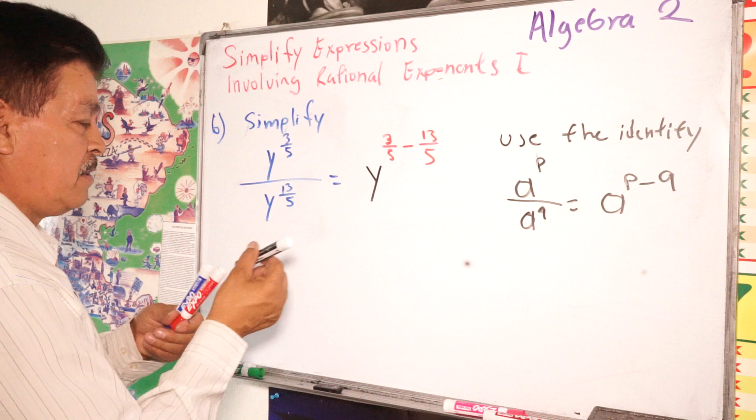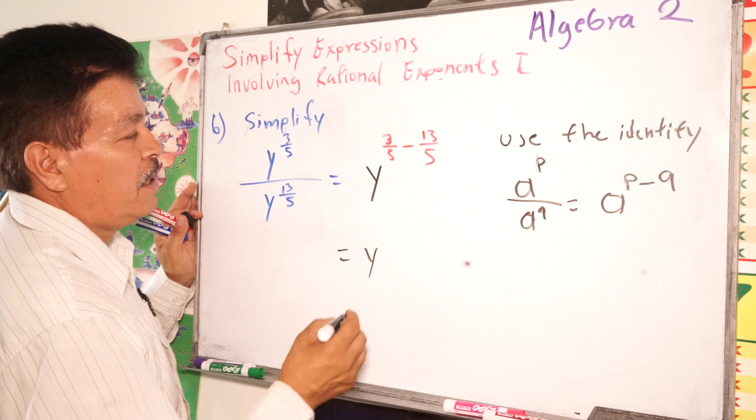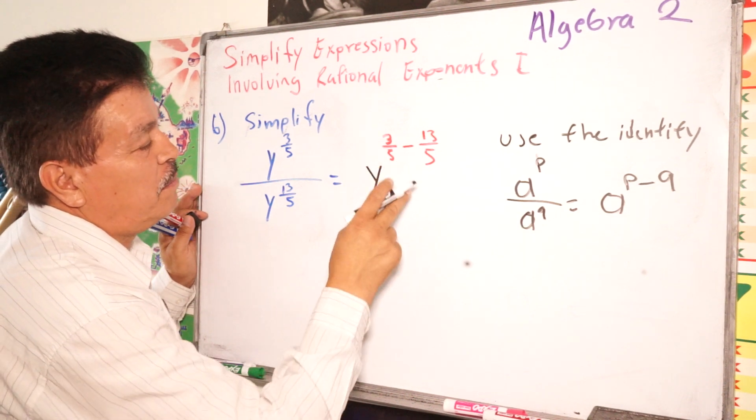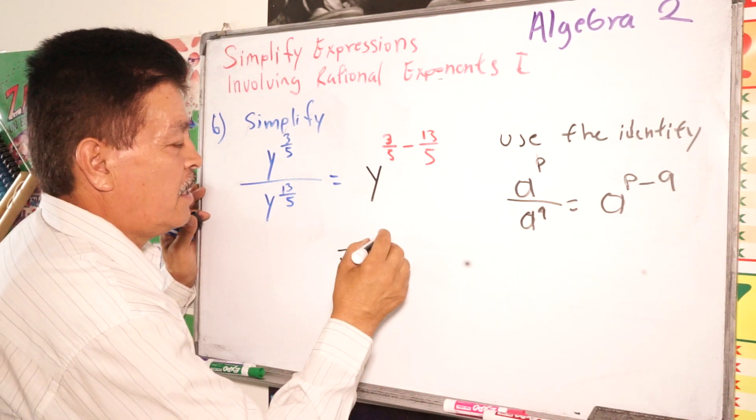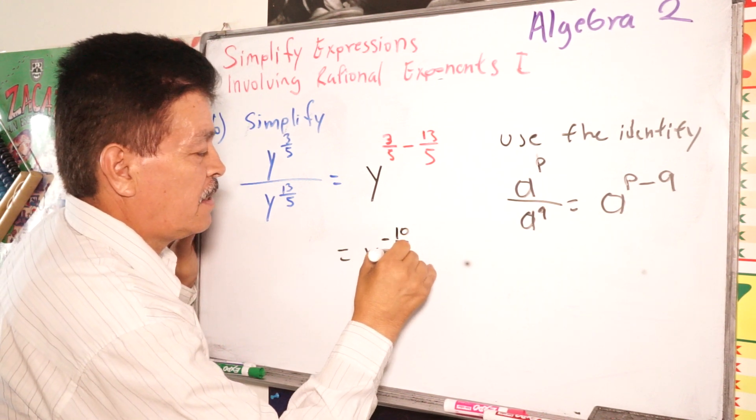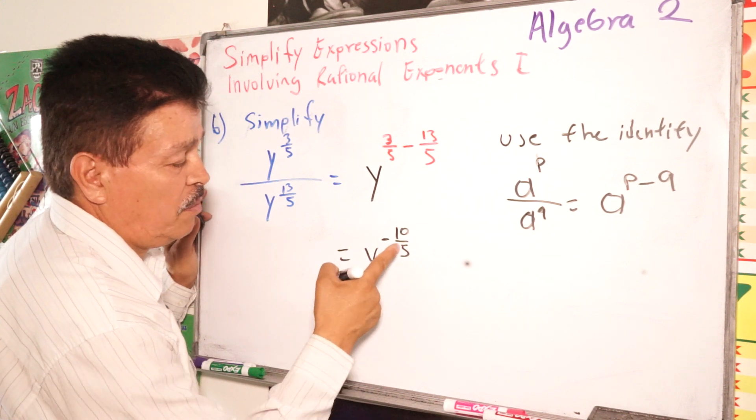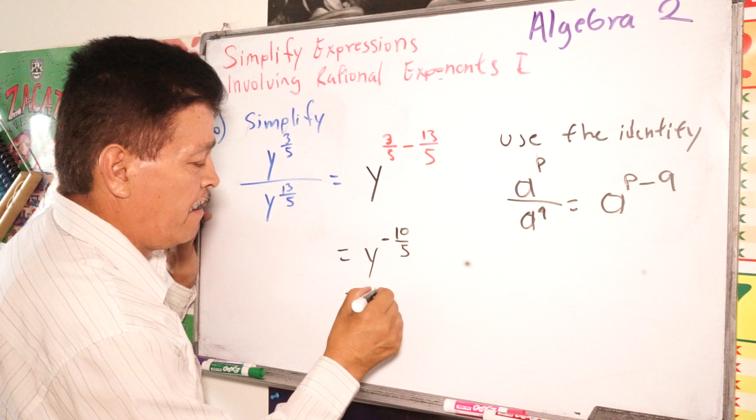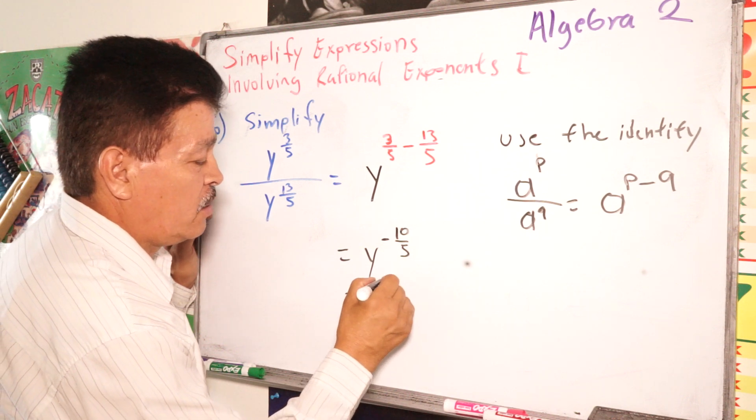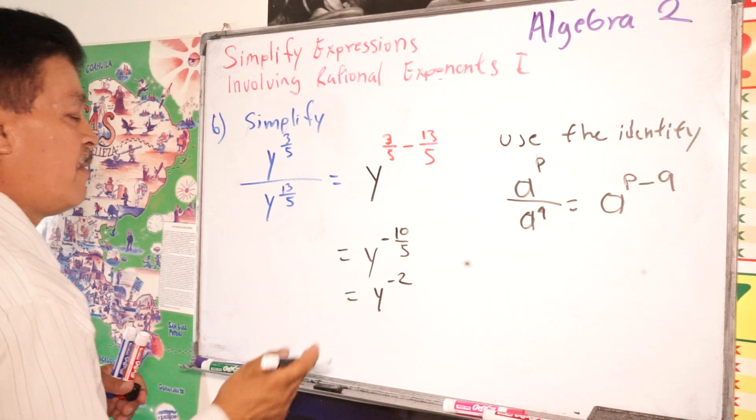So here, simplify here. You simplify, we are going to have Y equals 3 fifths minus 13 fifths, and it is negative 10 fifths, right? So you are able to simplify. It's easy to simplify. Divide by 10 by 5 is Y to the negative 2 power, right? 10 divided by 5 is 2.